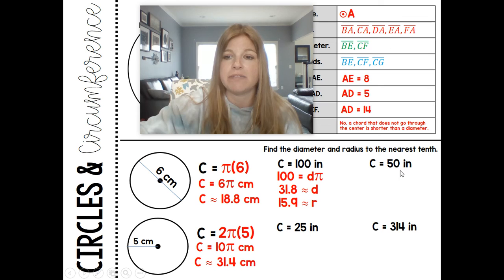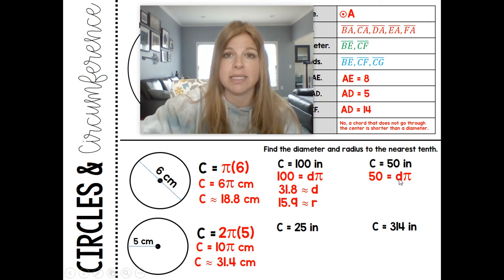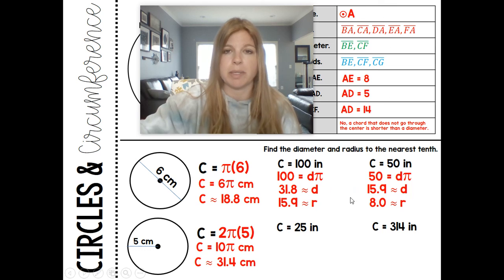Same thing here. If I set this up, 50 is then equal to the diameter times pi. If I need to calculate the diameter, I would then divide both sides by pi. 50 divided by pi is about 15.9, and the relationship between the diameter and radius, I would then divide that by 2. It's approximately 8.0. I'm rounding to the tenths place, so that's why my numbers look this way.